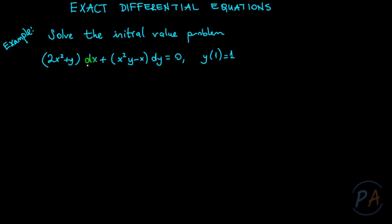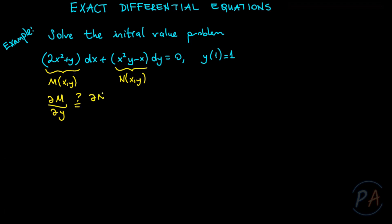Let me name the coefficient of dx as M(x,y) and the coefficient of dy as N(x,y). Let me check the exactness condition: partial derivative of M with respect to y equals partial derivative of N with respect to x. If this condition is satisfied, we say the given differential equation is exact.